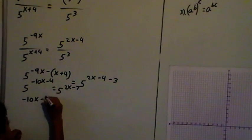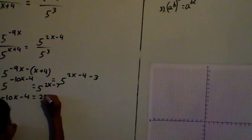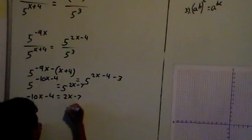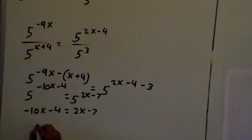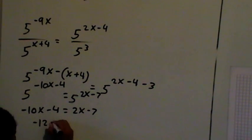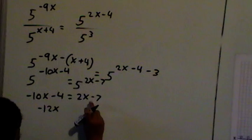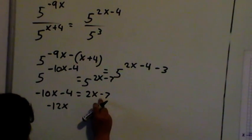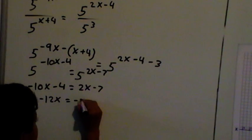Minus 10x minus 2x, when you bring it over to this side, is minus 12x. Minus 4 plus, wait, minus 7 plus 4, when you bring it over to that side, is minus 3.